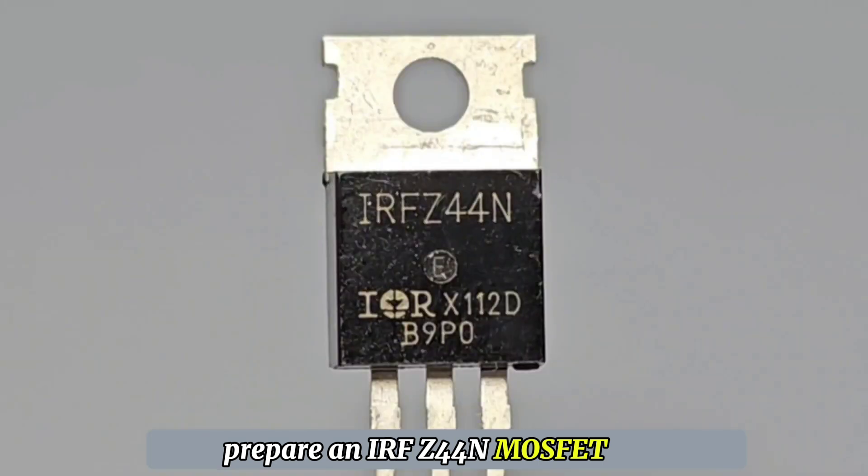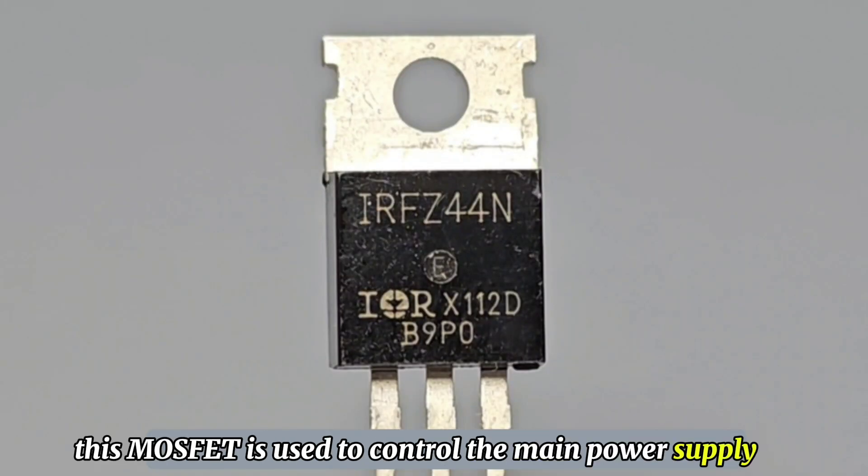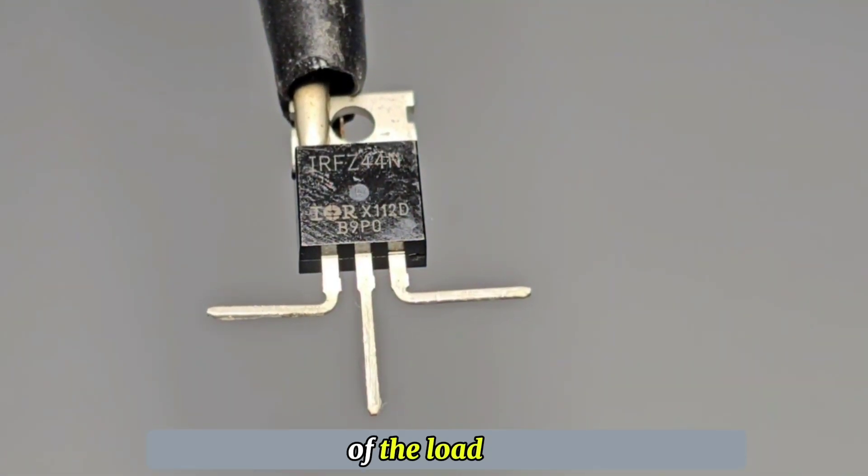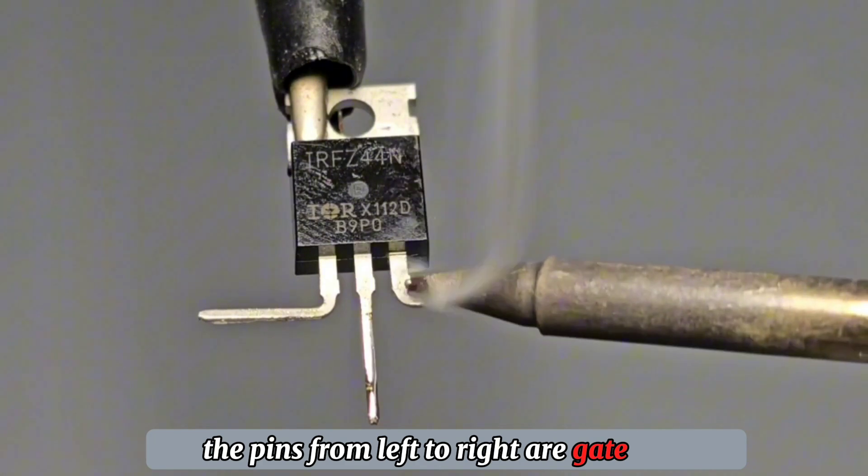Prepare an IRF-Z44N MOSFET. This MOSFET is used to control the main power supply of the load. The pins from left to right are gate, drain, and source.